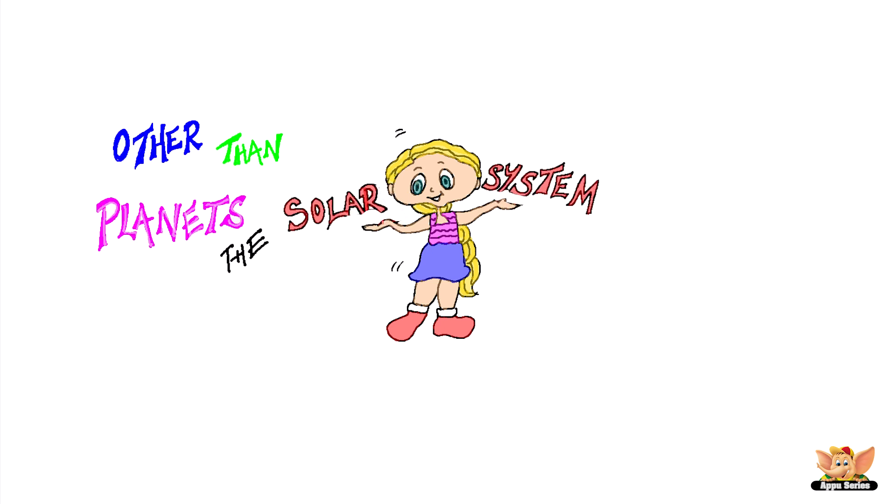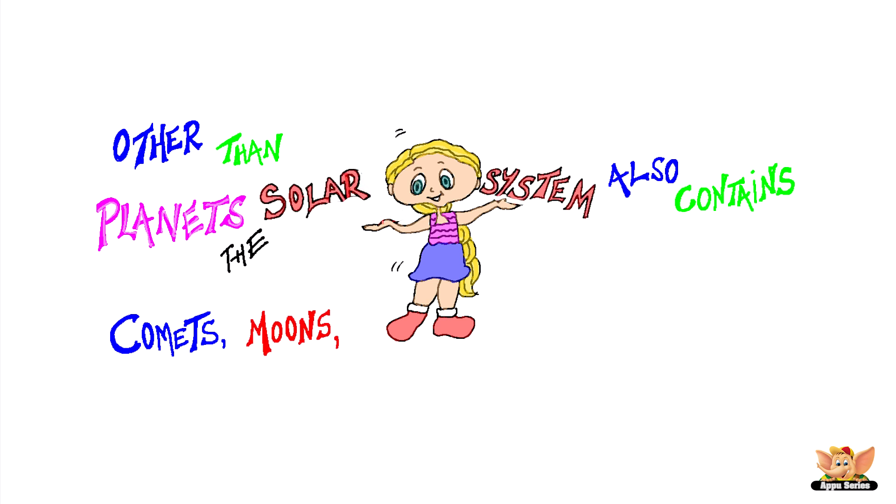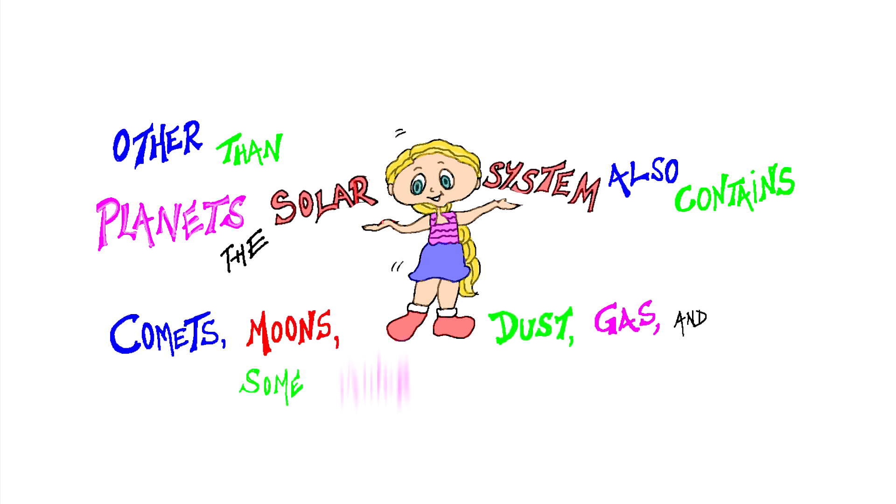Other than planets, the solar system also contains comets, moons, dust, gas, and some minor planets.